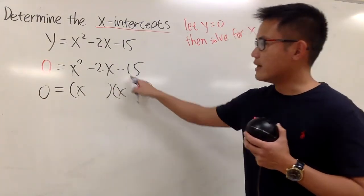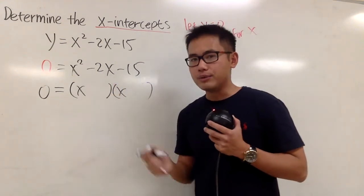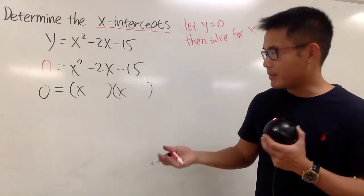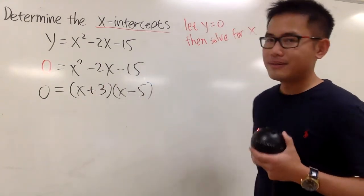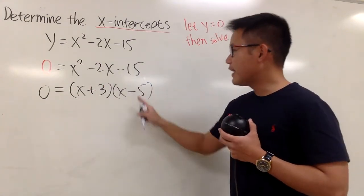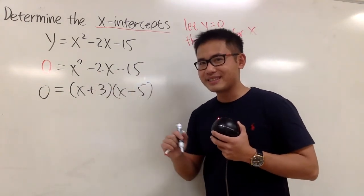And now, what times what will give us negative 15. And together, they add out to be negative 2. And the correct combination in this case is positive 3 and negative 5. 3 times negative 5 gives us negative 15. 3 minus 5 gives us negative 2. So this is correct.